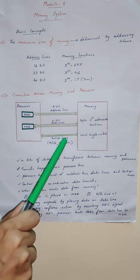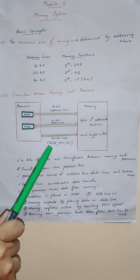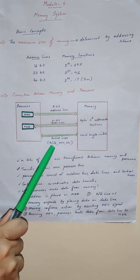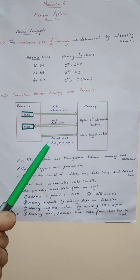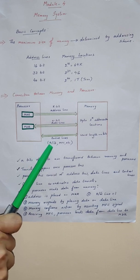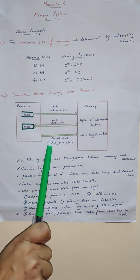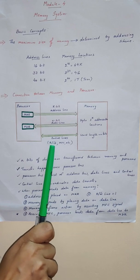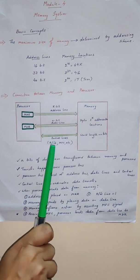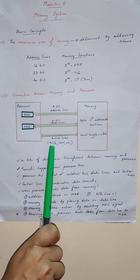The control line coordinates the data transfer. It has certain signals which help with that, like a read or write signal. If this read or write signal is set as 1, that means a read operation happens. If this signal is set as 0, that means a write operation is going to happen.